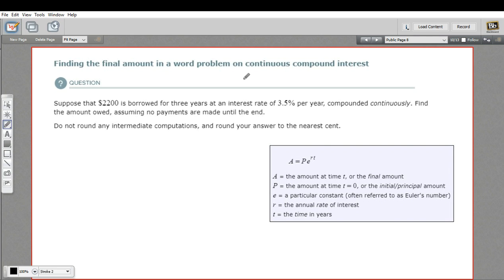We've seen interest problems where the interest is compounded annually or maybe semi-annually, that's twice a year, or at some other period in a year. There is another type of interest, and that is interest that's compounded continuously. For continuous compounding we use this formula right here, it's called the PERT formula for obvious reasons.